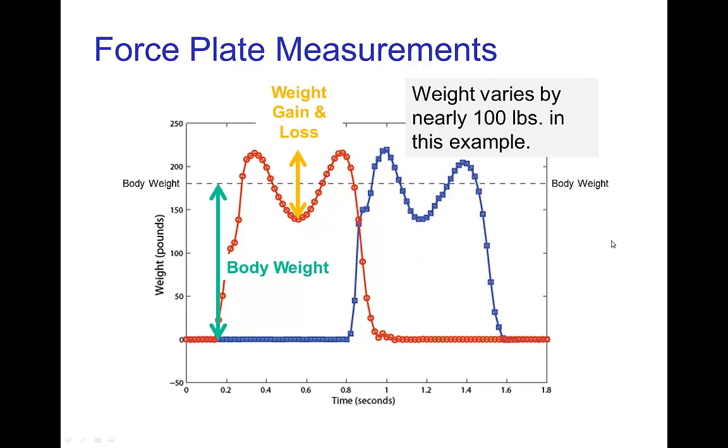The first thing to notice is that the amount of weight gain and loss is rather significant. Here, if this indicates the average body weight, which would be if the person was just standing on the plate without moving, that gain and loss is over a range of nearly 100 pounds from peak to this lowest point. It's a very significant amount of weight variation even for a normal walk.